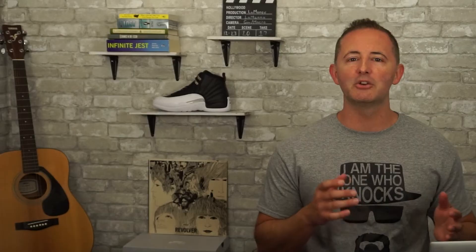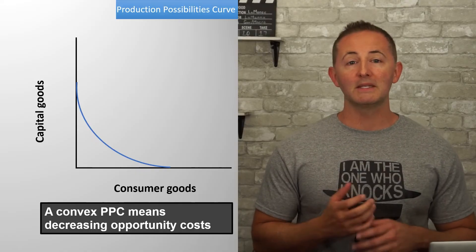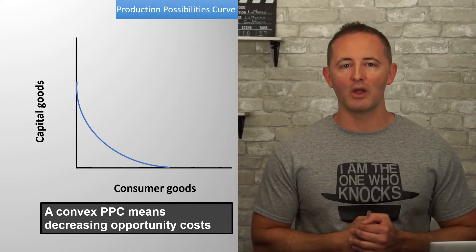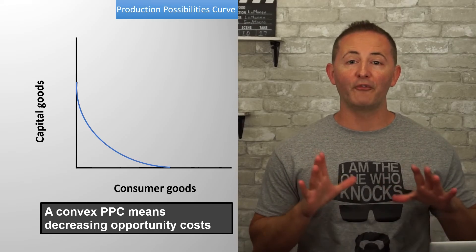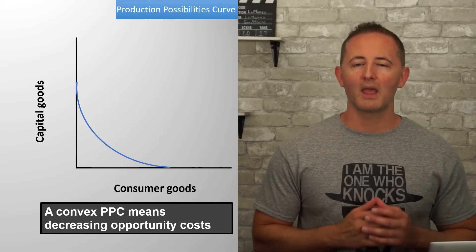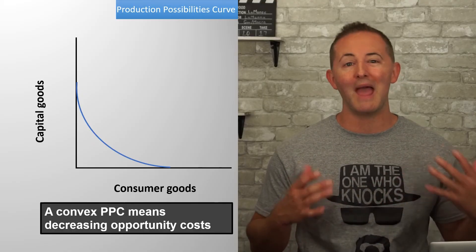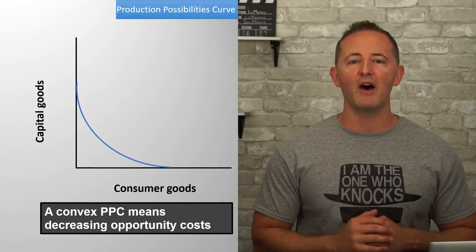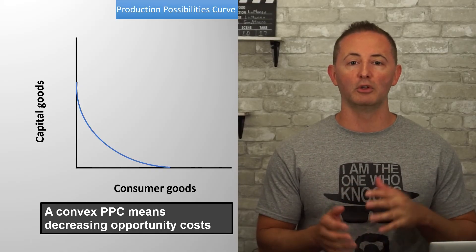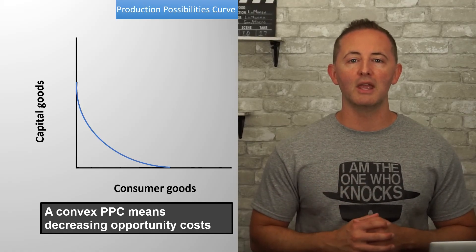There is a third possibility — one that's probably the least common in the real world and on the AP exam — and that's decreasing opportunity costs. This is a convex, or bowed inward, PPC, and it's literally the opposite of the previous one: the more consumer goods we produce, the fewer capital goods we have to give up. While this is possible, it's extremely rare, and to fully explain the logic we'd need concepts we haven't covered yet. For now, you'll be fine just understanding what this graph looks like and knowing that it involves a reduction in opportunity costs as more of a good is produced.